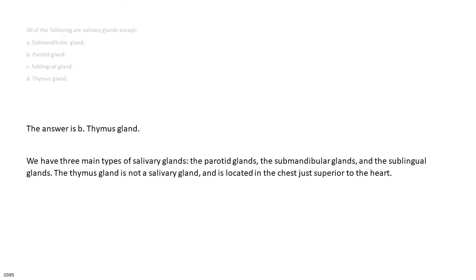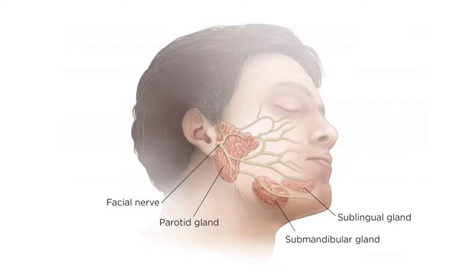The answer is d. Thymus gland. We have three main types of salivary glands: the parotid glands, the submandibular glands, and the sublingual glands. The thymus gland is not a salivary gland, and is located in the chest just superior to the heart.